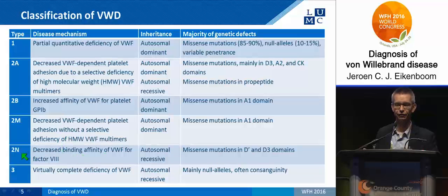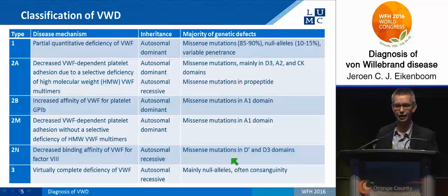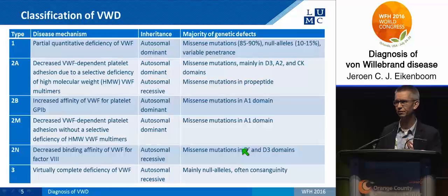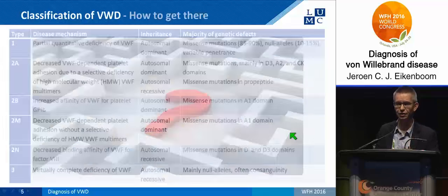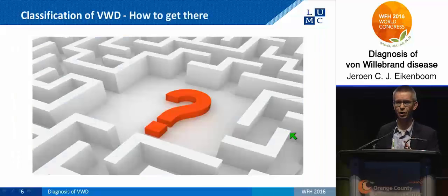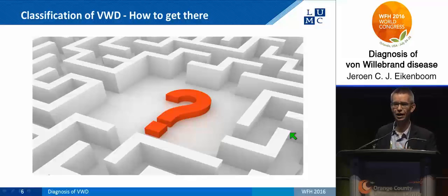Finally, we have type IIn, characterized by a defective binding of factor VIII to fulvirate factor. Most types are autosomal dominant in type II; only type IIn has a recessive inheritance. Although the classification is clear-cut, the question is how to get to the right diagnosis.